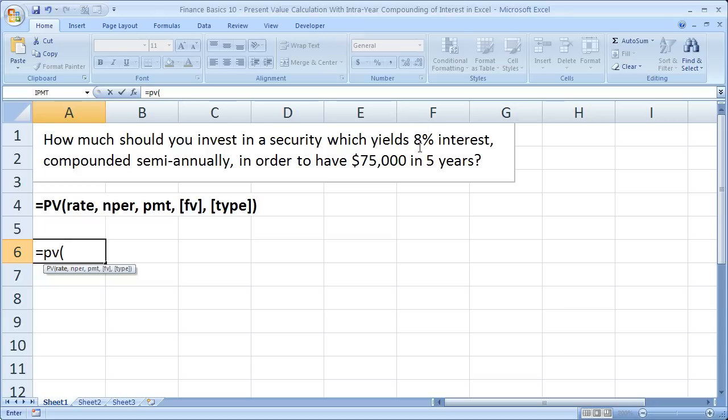So it's not 8%. Instead, it's 4%. The way you do that is very simply 8 divided by 2. So 8 divided by 2 equals 4.